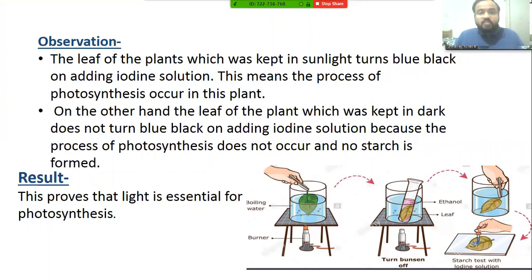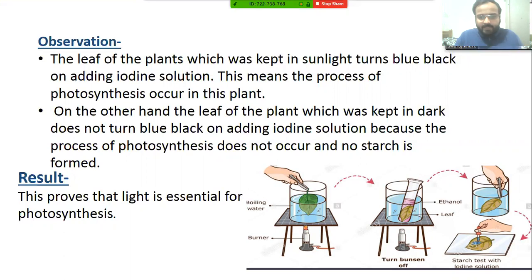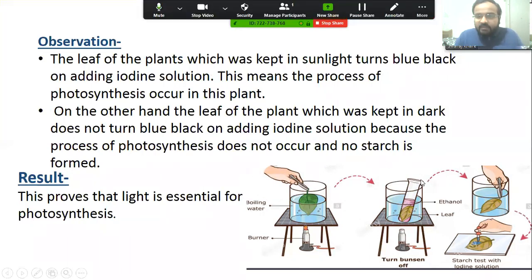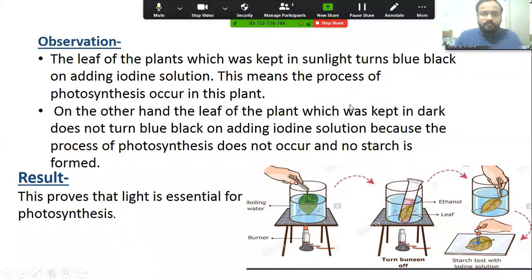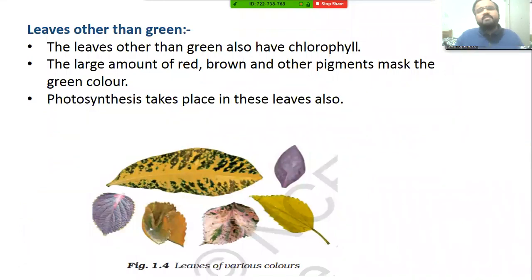The leaf kept in dark does not turn blue-black on adding iodine solution because the process of photosynthesis does not occur and no starch is formed. Result: this proves that light is essential for photosynthesis. As you can see in this diagram, we first boil the leaf in water, then boil it in ethanol or alcohol using a water bath, and finally add iodine solution to confirm the presence of starch.